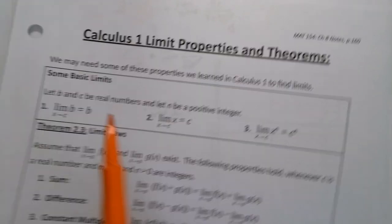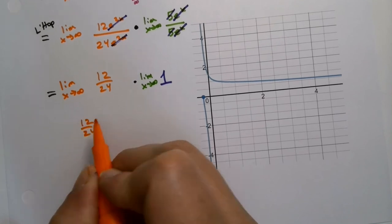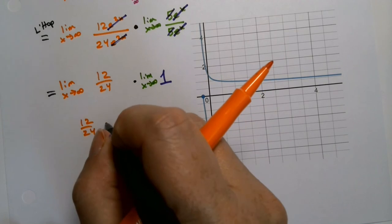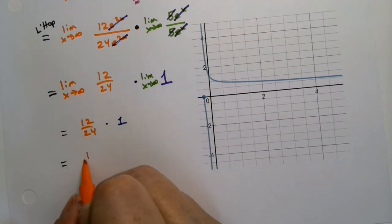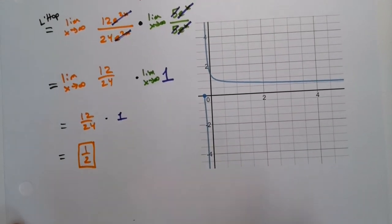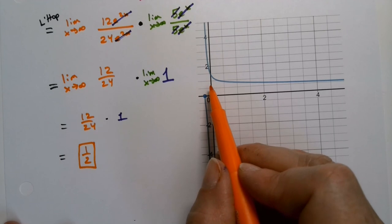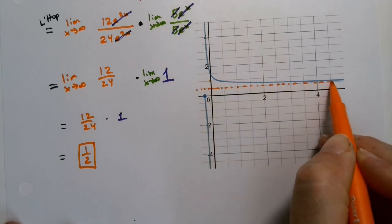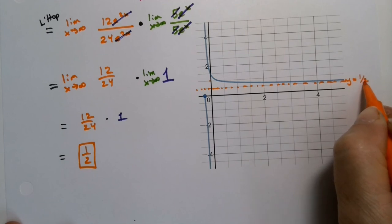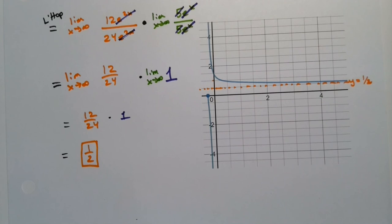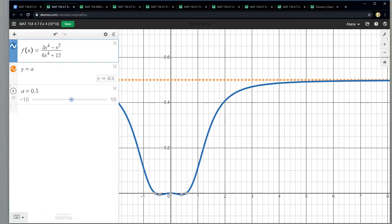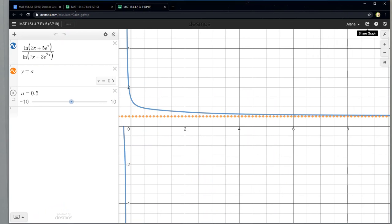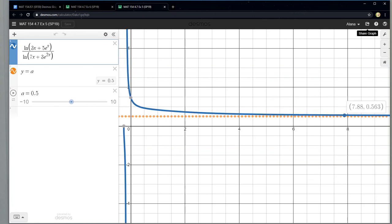Since there are no more x's, and the limit of a constant is that constant — rule number one — this is 12/24 times 1. And 12/24 is one half. That's the limit. It does verify graphically: if this is 2 then this is 1, and this right here is a half. You can see the function approaching one half.